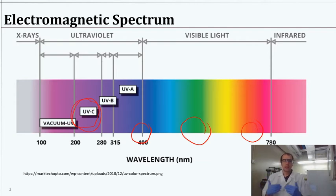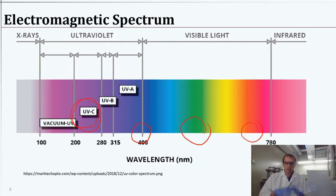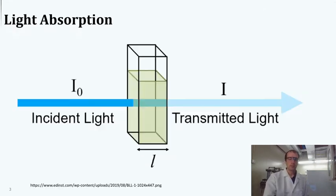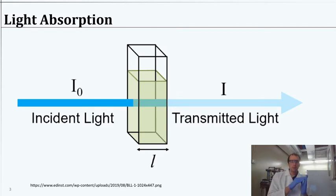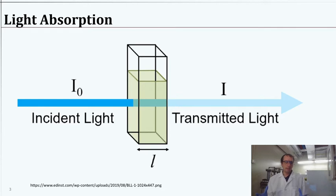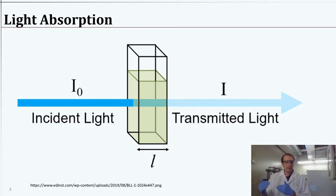Instead of looking at the treatment side, we're really looking at using this light to understand what's in our water better. There are two concepts. One is light absorption. As light passes through some fluid, it gets dimmer — some of the light has been absorbed by whatever chemicals are in that water. When it gets absorbed, that happens based on how much of the chemical is in the water. If you're absorbing more light, that means there are more molecules, more of this chemical, more contamination.